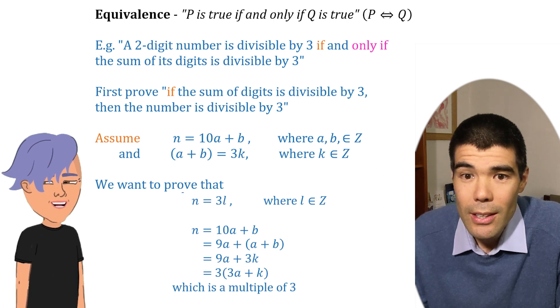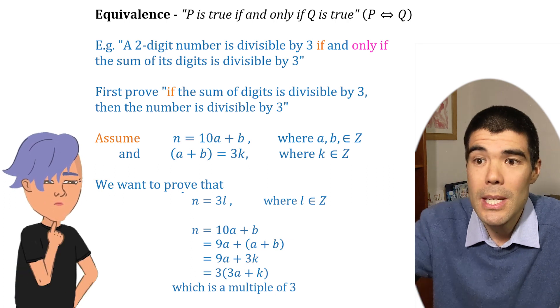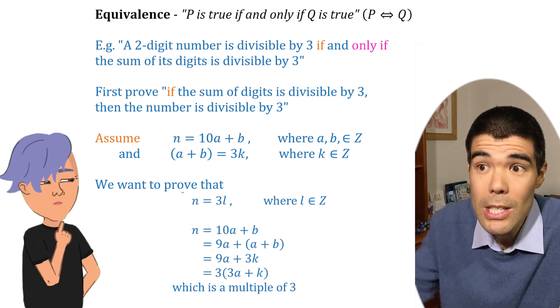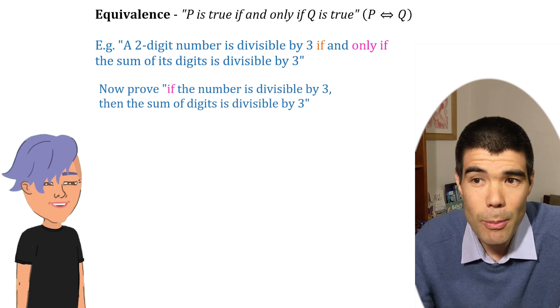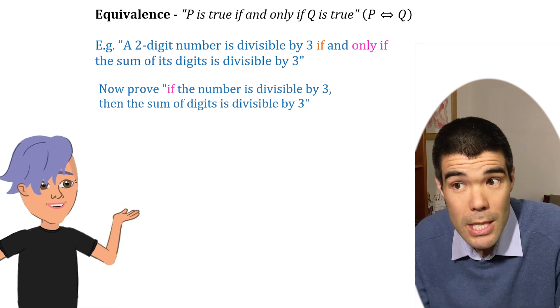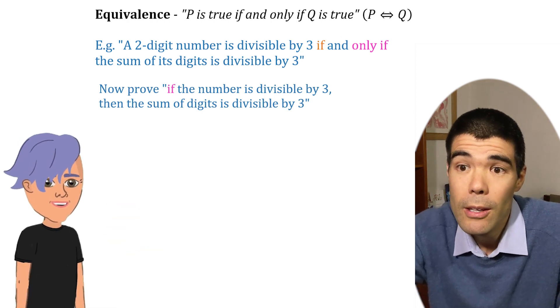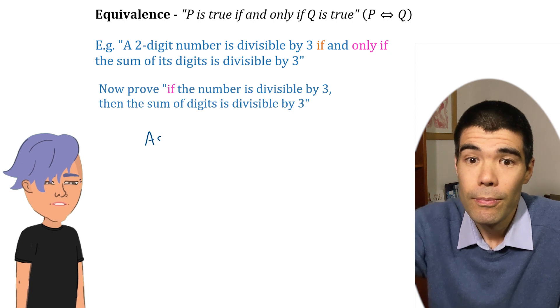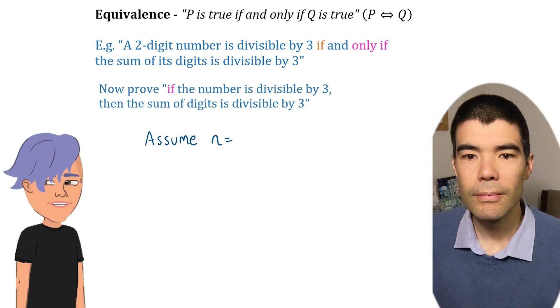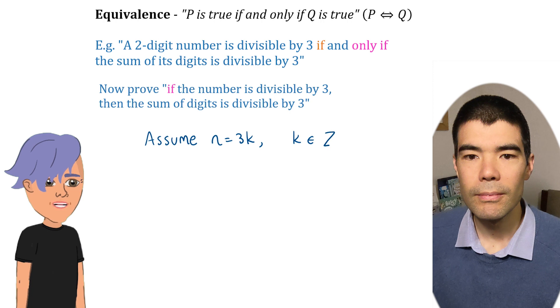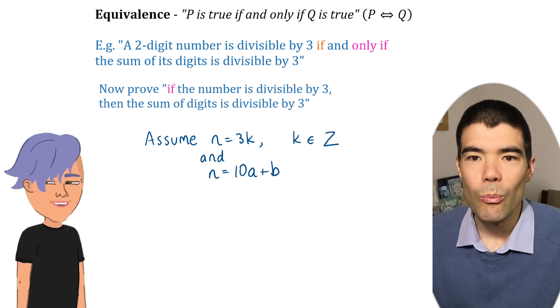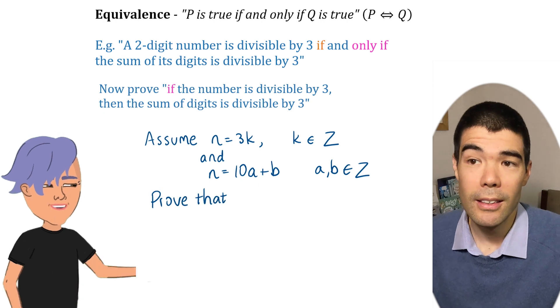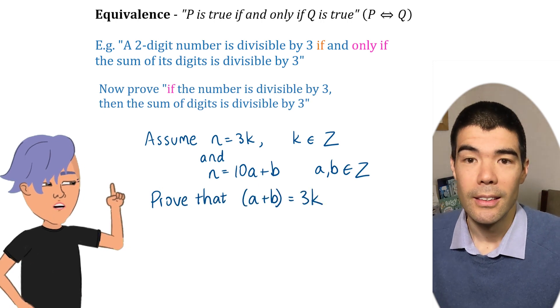Now we have to do the other direction. What do you mean? It was an if and only if statement. We proved the if, now we need to prove the only if. In other words, if the two digit number is divisible by 3, then the sum of the digits must be divisible by 3. Alright, so we start from n being a multiple of 3, so 3k. And it's also a two digit number, so 10a plus b again. We want to now prove that a plus b is also 3k.